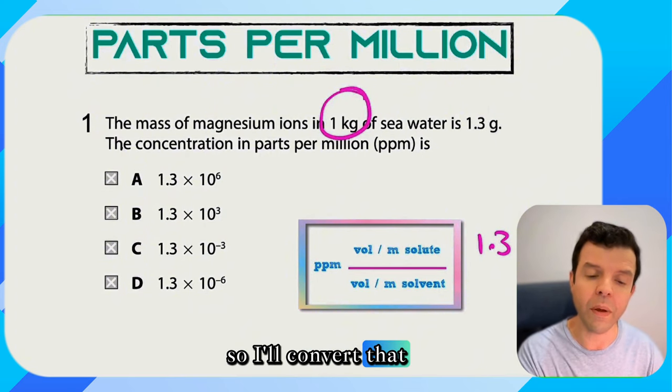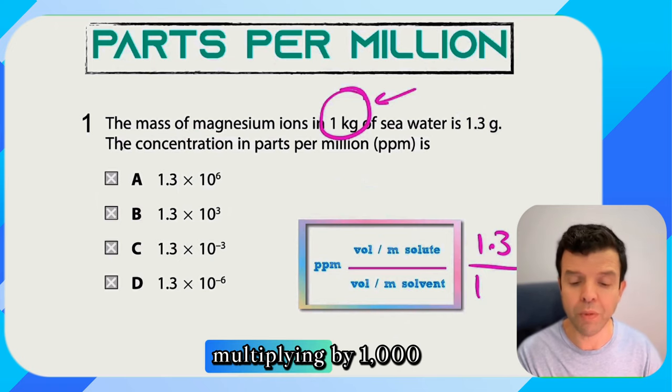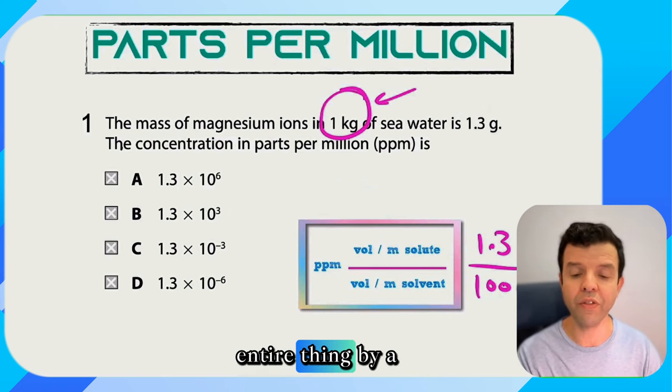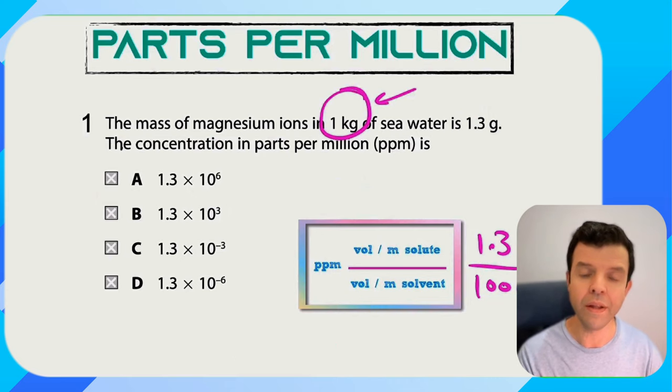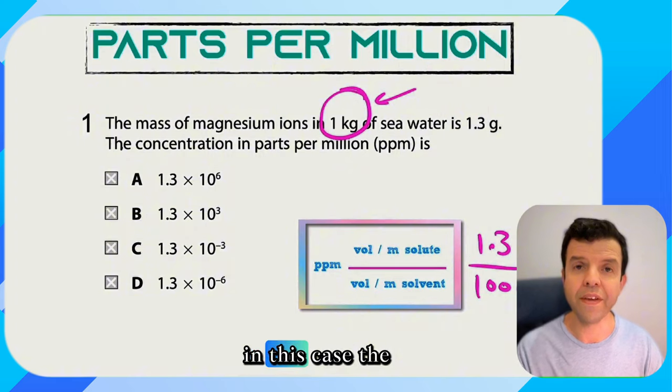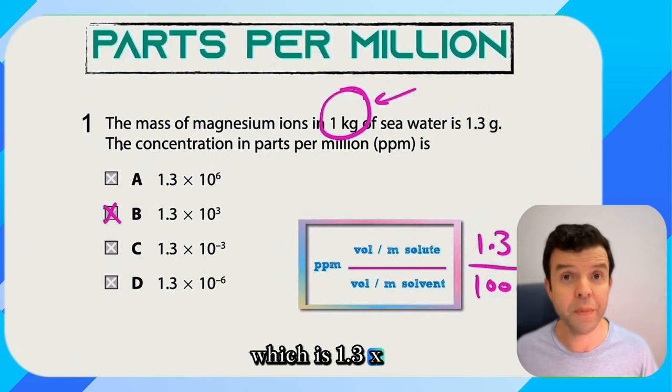So I'll convert that kilograms of solvent into grams by multiplying by a thousand then I'll multiply the entire thing by a million to get a significant concentration. In this case the answer is going to be B which is 1.3 times a thousand.